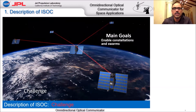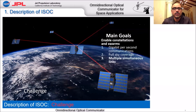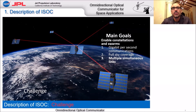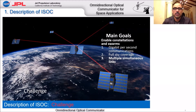The main goals for this development were the following. First, we wanted to achieve gigabit per second communications. Second, we wanted to obtain full sky coverage, so we could talk to any spacecraft in the surroundings. And third, we wanted to achieve multiple simultaneous links with the ISAC as well. The philosophy of the design follows these three main goals.